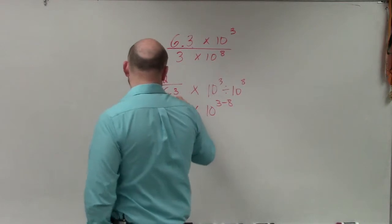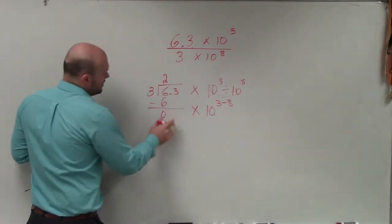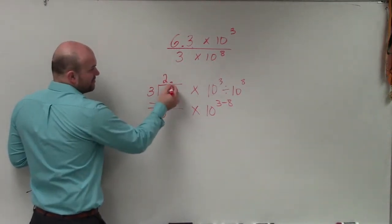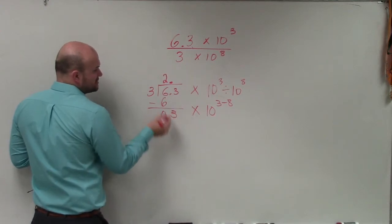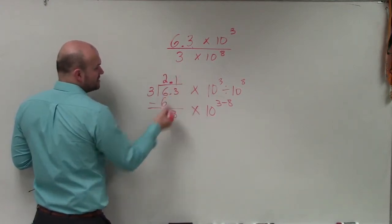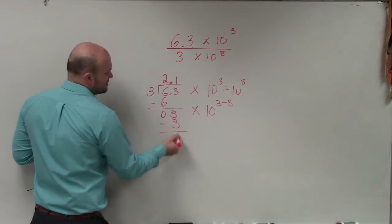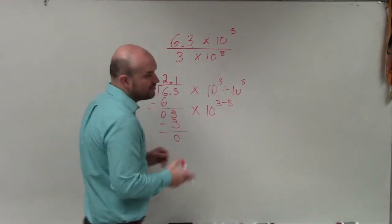Bring down 3 does not go into 0, so I put in my decimal point. Bring down the next value, which is 3. 3 does go into 3 one time. 1 times 3 equals 3. Subtract.